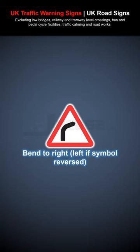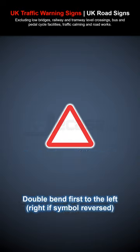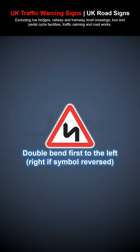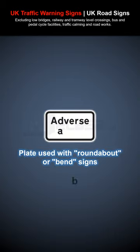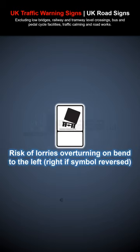Roundabout, bend to right or left (symbol reversed if opposite), double bend first to the left or right (symbol reversed), junction on a bend. Symbols may be reversed. Plate used with roundabout or bend signs. Risk of lorries overturning on bend to the left or right (symbol reversed).